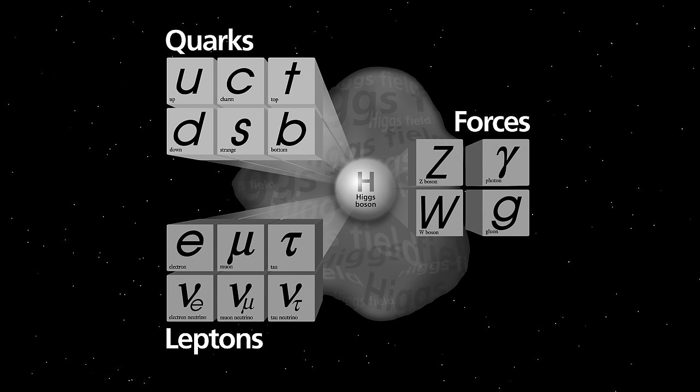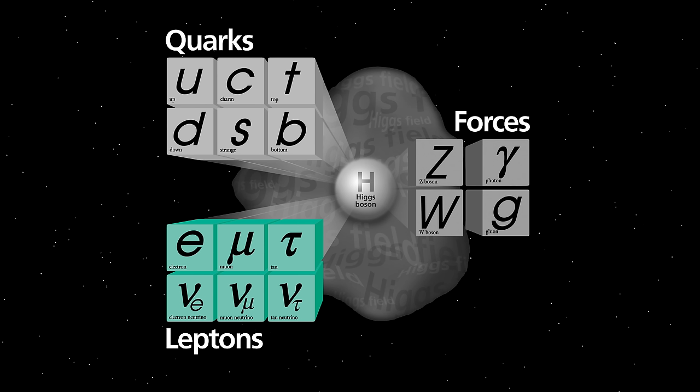The word lepton is used to describe subatomic particles like the charged electron and another particle called a neutrino, which interacts so weakly that it can pass through the entire earth. Leptogenesis predicts that physical processes that govern leptons are the answer to the mystery of the matter-dominated universe.